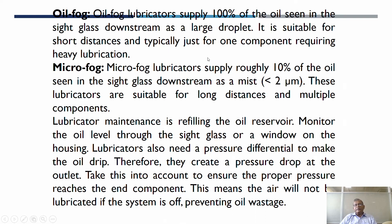Oil fog lubricators supply 100% of the oil seen in the sight glass downstream as large droplets. They are suitable for short distances and typically just for one component requiring heavy lubrication. Micro fog lubricators apply roughly 10% of the oil seen in the side glass downstream as a mist of less than 2 micrometers. These lubricators are suitable for long distances and multiple components.